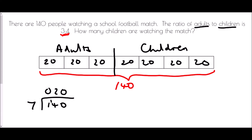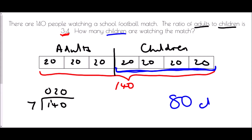We want to know how many children are watching, so we look at the children's section — four blocks of 20. That is 20 plus 20 plus 20 plus 20, which equals 80 children.